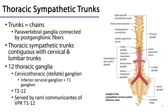The sympathetic trunks are synonymous with sympathetic chains. These are a series — both right and left — of paravertebral ganglia, meaning they sit to the side of the vertebrae, connected by postganglionic fibers. Within the thorax we have a series of 12 ganglia associated with T1 through T12 spinal nerves. Each of these ganglia communicate with a ventral primary ramus of a thoracic spinal nerve.